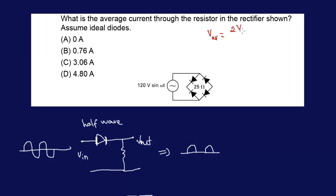So you have 2 times Vmax over pi, 2 times 120 over pi, that's 240 over pi. Now that we know our voltage, we can calculate our current.